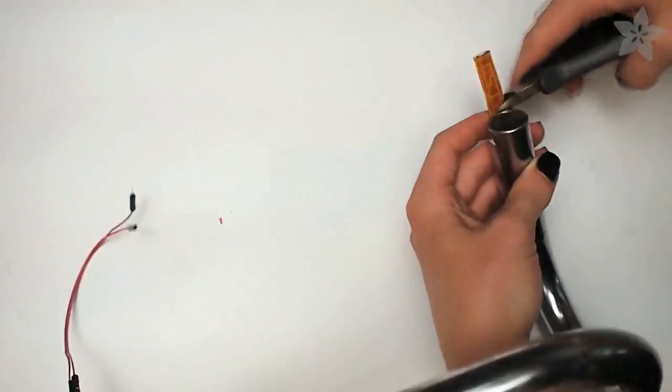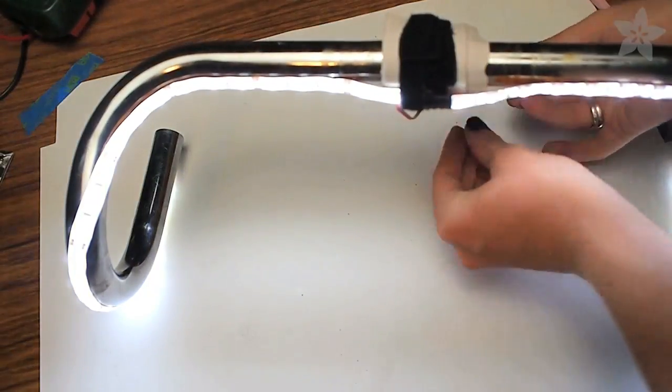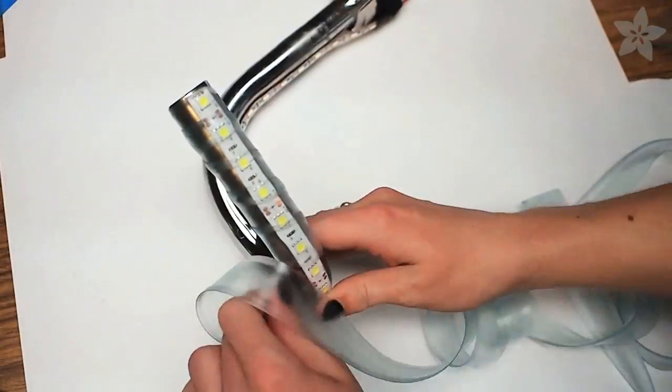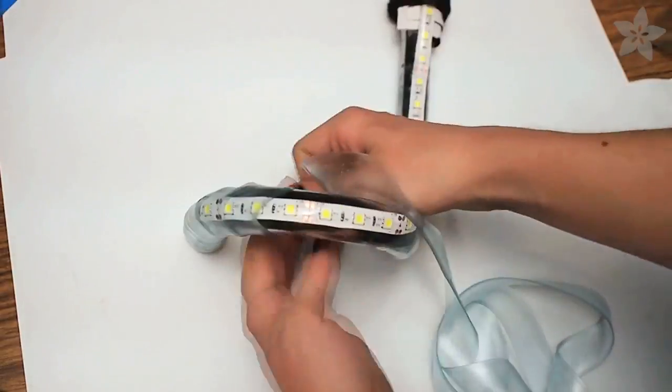You may need to trim off some extra LEDs with some flush snippers. Power them up and make sure they work before you go any further. And then whip out the secret ingredient, it's clear handlebar tape. I found it on Amazon and it's pretty easy to work with.